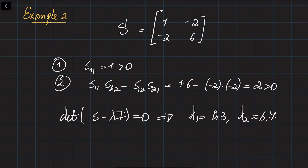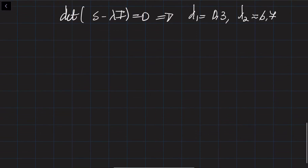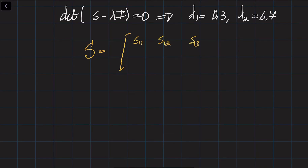For a 2 by 2 matrix, it is clear what the conditions are. Now, if you are given a 3 by 3 matrix, how do we handle that? For a 3 by 3 matrix S with entries s11 through s33, we check the following conditions for positive definiteness.